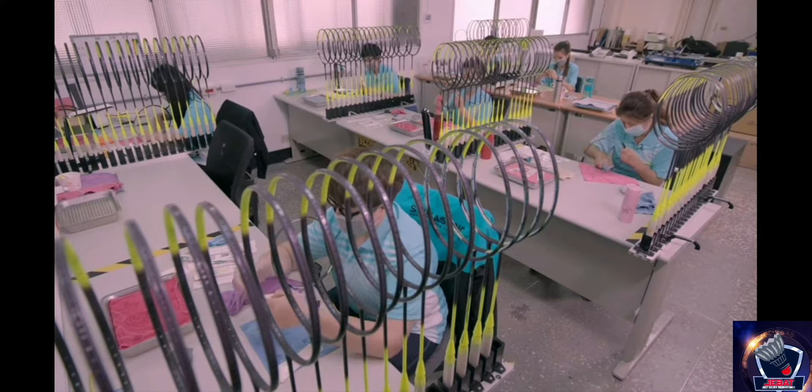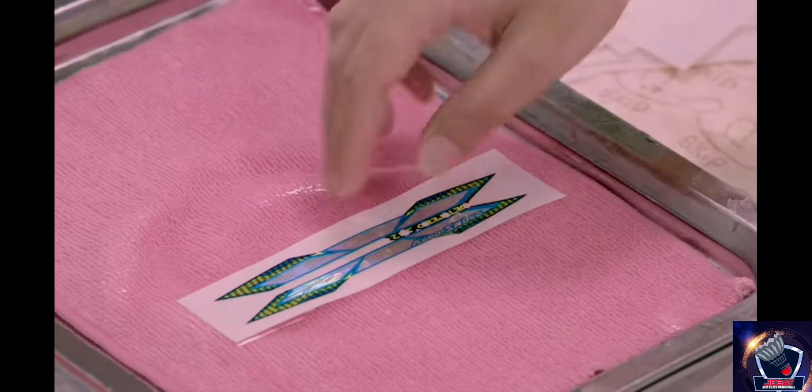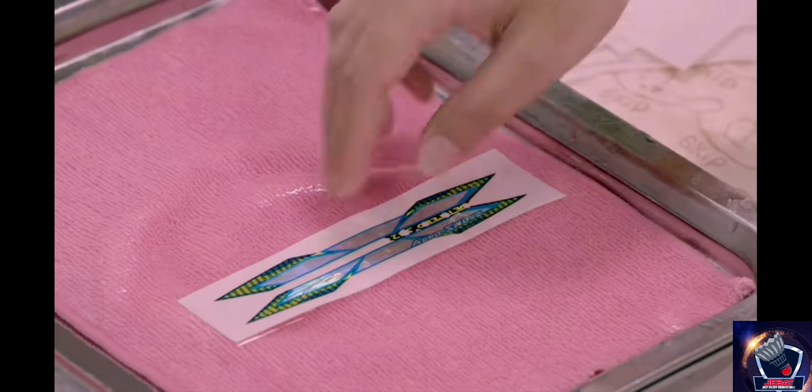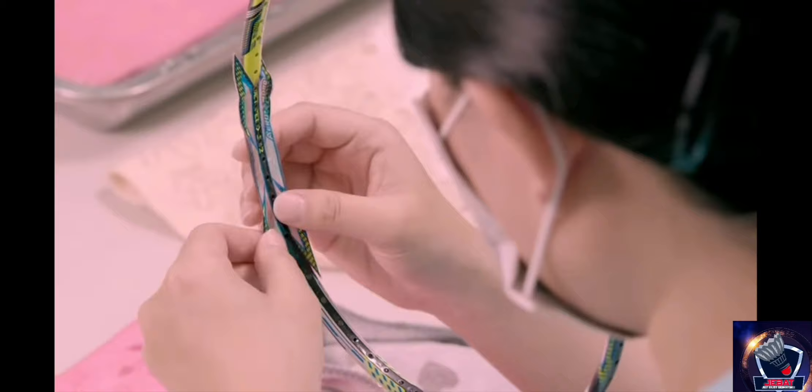The rackets head for the painting department, where they receive a base coat. Then workers meticulously apply a series of decals. The decals soak in water to make it easier to remove the backing.